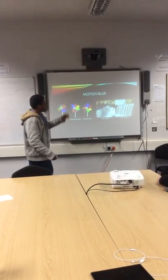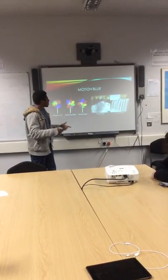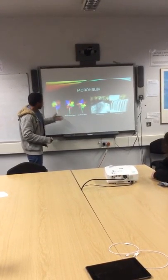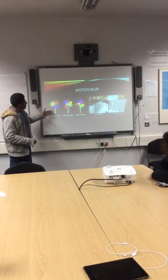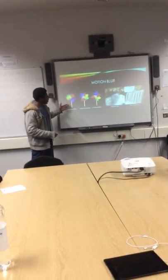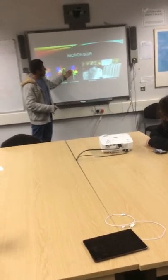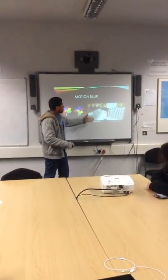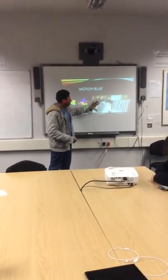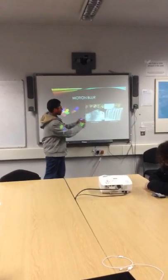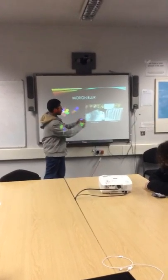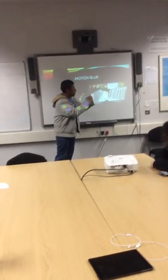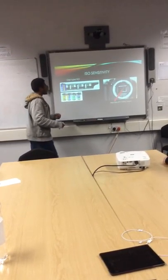Motion blur is caused by a slow shutter speed. If you look here, this is the slow shutter speed — you can see the fans going around. As it gets faster and faster, it freezes the fan. Same with water: the fast shutter speed captures every single piece, while the slow shutter speed makes the water look like smoke because it captures more movement.